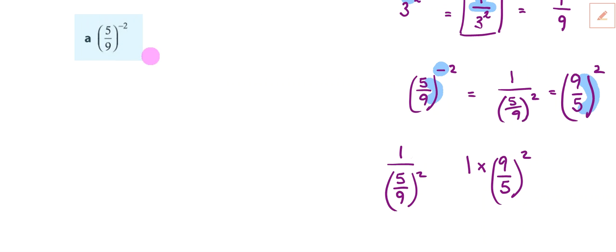So using that when we come to this to finish it off, the negative makes it 9 fifths to the power of positive 2. And then using that rule we did before, the 2 gets applied. So it becomes 81 divided by 25 because it's 9 squared divided by 5 squared.